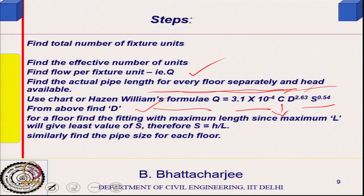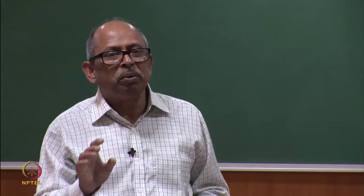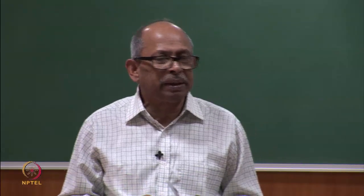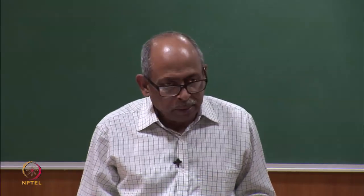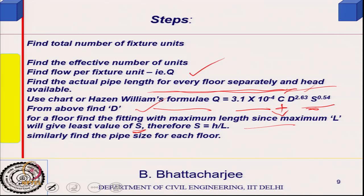The roughness coefficient C is known for the pipe type — for cast iron it is 100, and these values are tabulated. Since length and available head are known, D is the only unknown and can be found. For each floor, find the fitting with maximum length, which gives the least value of slope S. Use uniform pipe sizes as much as possible — taking the least S corresponds to the maximum D. Similarly, find pipe sizes for each floor.